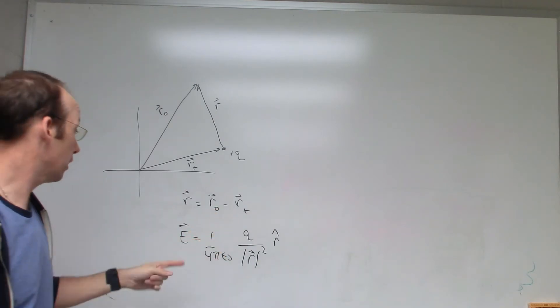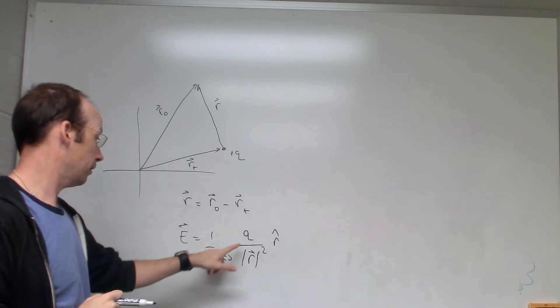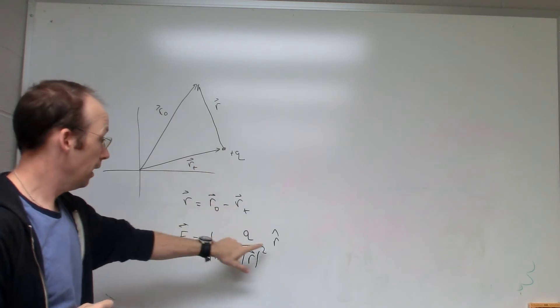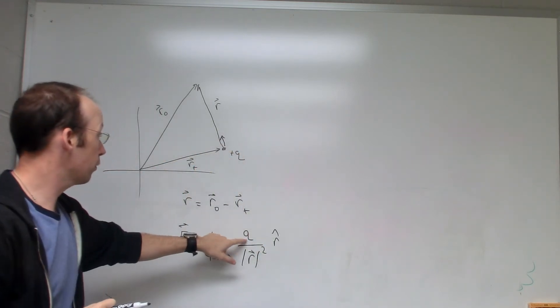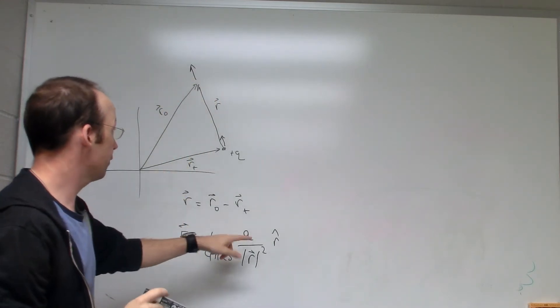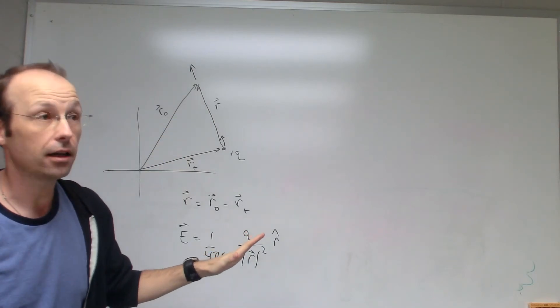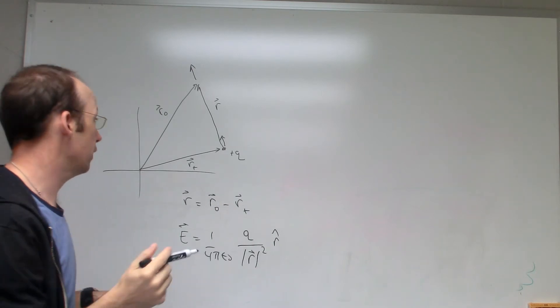With this equation, E equals 1 over 4 pi epsilon naught q over r squared r hat. And that's it, that's really it. So this is a constant, this is that 9 times 10 to the 9th constant. This is the charge right there, that's the magnitude of that vector, and that's a unit vector for that. So if q is positive then the electric field is going to be pointing that way. If q is negative it's going to be pointing that way.